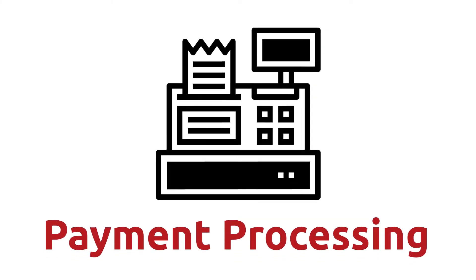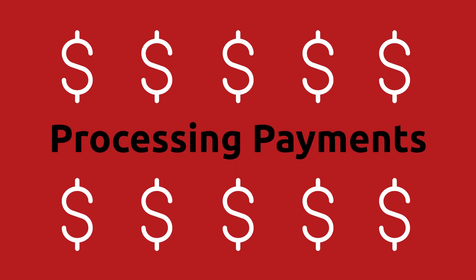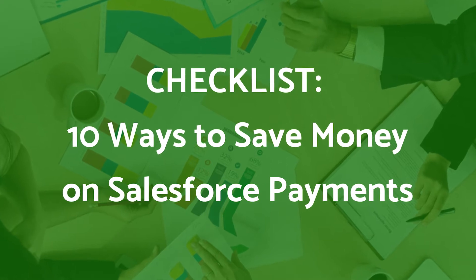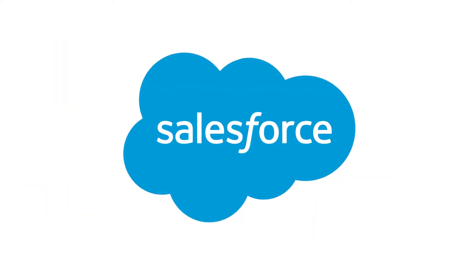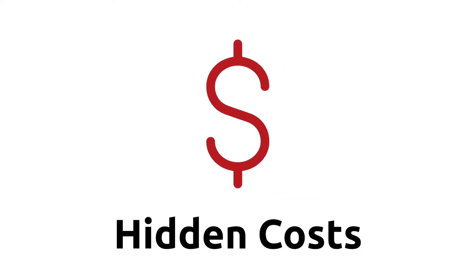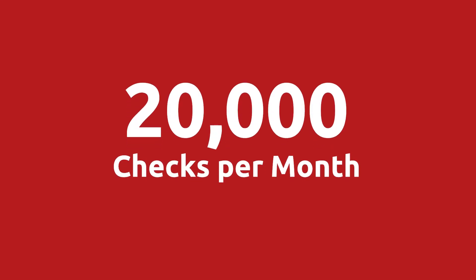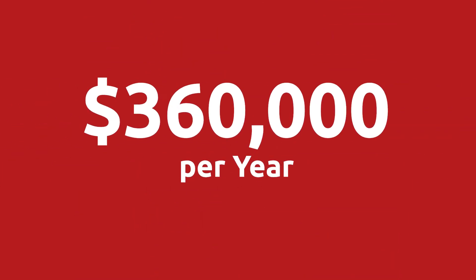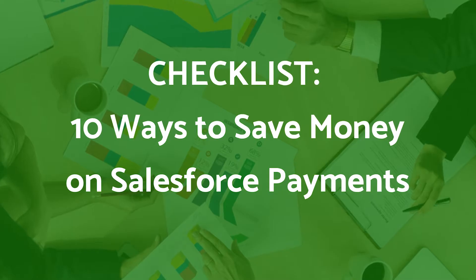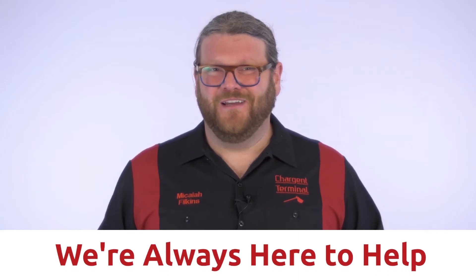Step seven: train your staff on the new system. Payment processing is often a drag on your bottom line and a common problem for businesses of all types. Here at Chargent, we know we can save you money when processing payments. We've created a checklist that gives you 10 tips on how you can save money when you take payments inside of Salesforce. Tip number one: stop taking paper checks. Checks have hidden costs and are very expensive to process. A survey of financial professionals showed that checks take a median of $1.50 to accept and process. If you're a large organization taking 20,000 checks per month, that's $360,000 per year in costs that add no value to your organization.